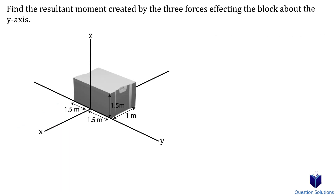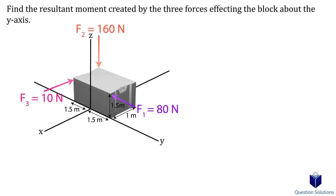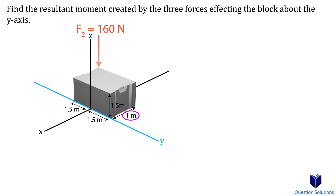Let's look at a problem with a concrete slab. There are three forces affecting it and we need to find the moment created about the y-axis. We'll use scalar analysis. First, force F1 won't create a moment about the y-axis since it's parallel to the axis itself, so we can eliminate it.